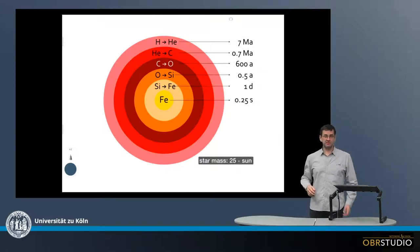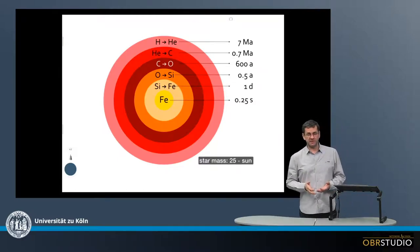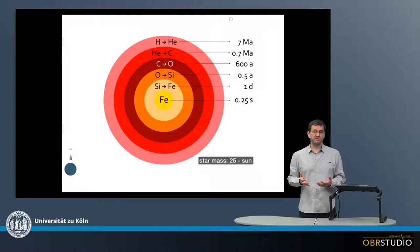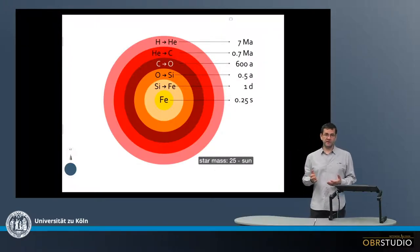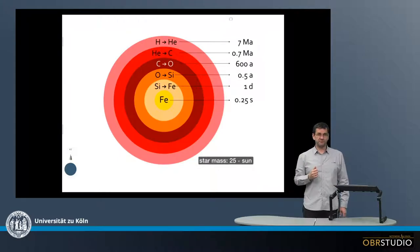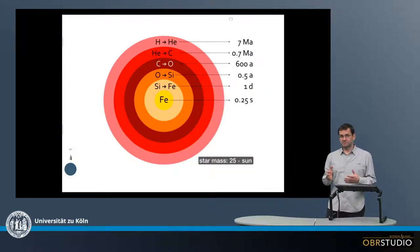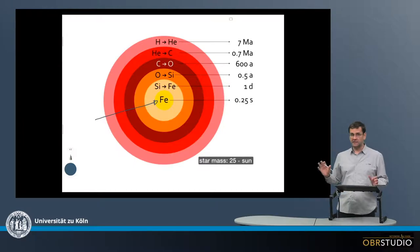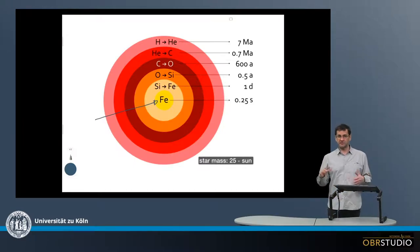In stars with masses larger than 25 times the mass of the Sun, the entire range of stellar nucleosynthetic processes can occur, which means everything from hydrogen up to iron can be produced. Now the beginning of stellar fusion is in the core of stars. So at the very beginning, in the core here, hydrogen burning starts and hydrogen fuses to helium.